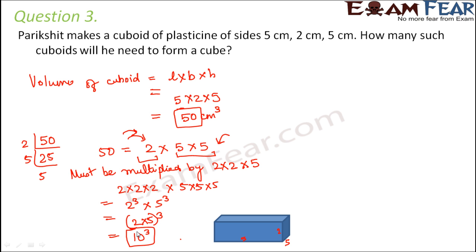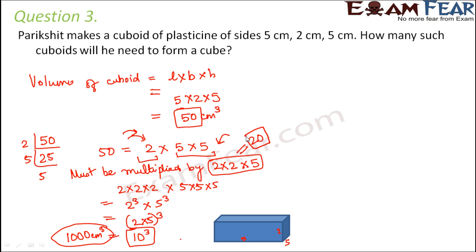10 cubed is 1,000, so 1,000 cm³ would be the volume of the cube with each side equal to 10 centimeters. How many cuboids do you need to make this cube? You would need 2 × 2 × 5 = 20 cuboids to make a cube of volume 1,000 cm³, where each side of the cube is 10 centimeters.